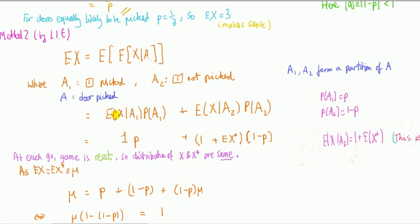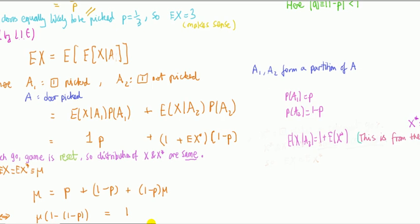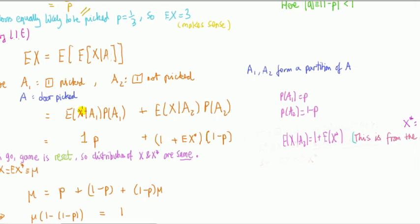Because it's type of door one or not door one. We see from the question that the probability of picking door one is p and not door one is 1 minus p. What remains is to look at the conditional expectations. Remember this form is conditional expectations.